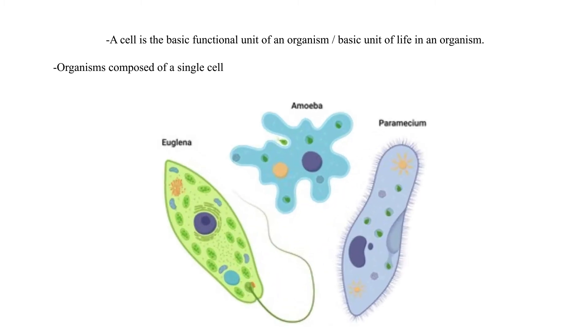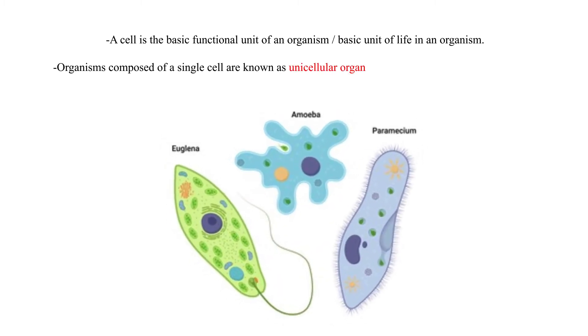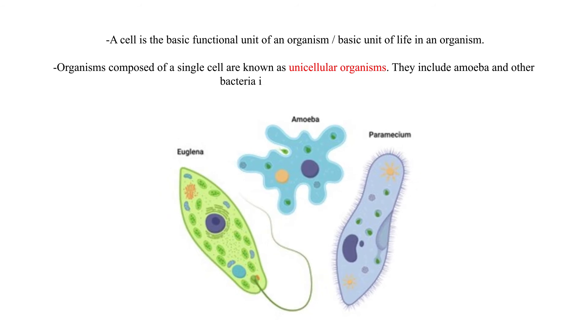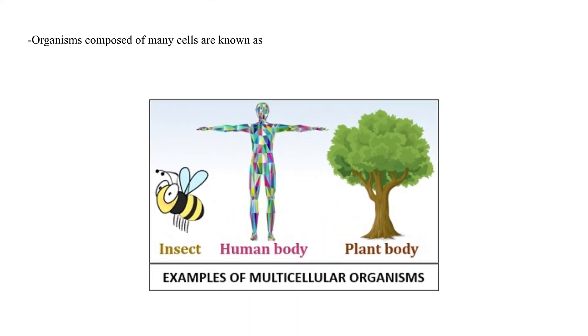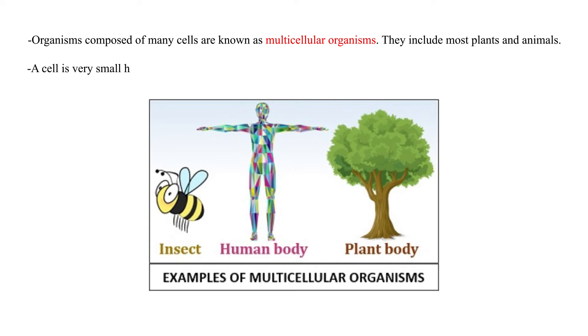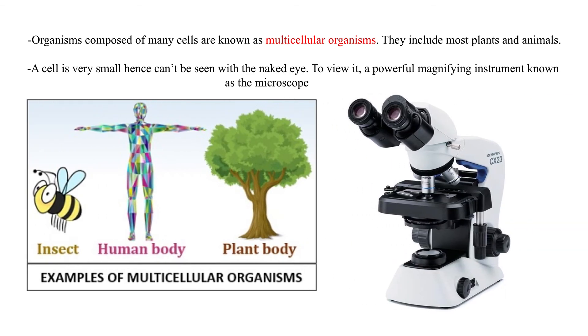A cell is the basic functional unit of an organism, or basic unit of life in an organism. Organisms composed of a single cell are known as unicellular organisms; they include amoeba and other bacteria in the kingdom Monera. Organisms composed of many cells are known as multicellular organisms; they include most plants and animals. A cell is very small and hence can't be seen with the naked eye — to view it, a powerful magnifying instrument known as the microscope is required.